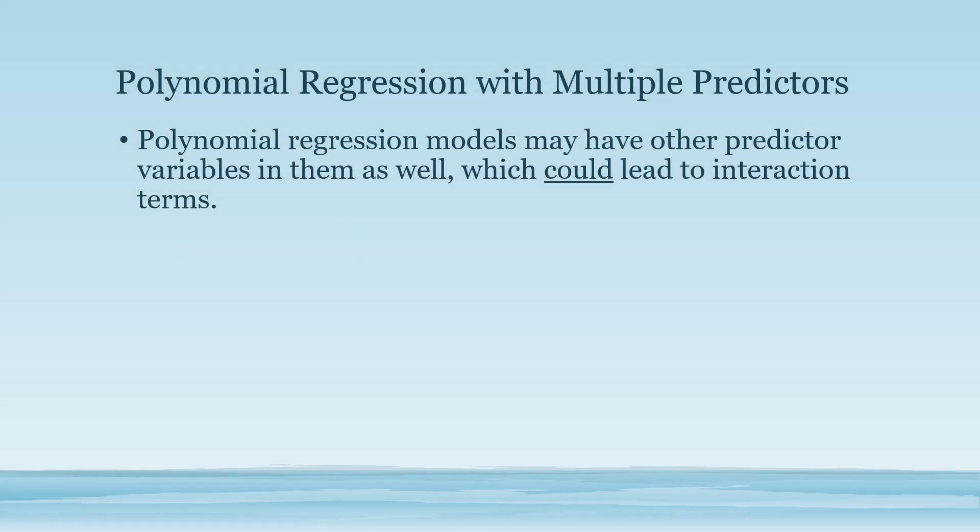In the first example, we ran polynomial regression with one predictor, the age of the fish. We can also run polynomial regression with two or more predictors. When we have two or more predictors, we can also examine the interaction between predictor 1 and predictor 2.